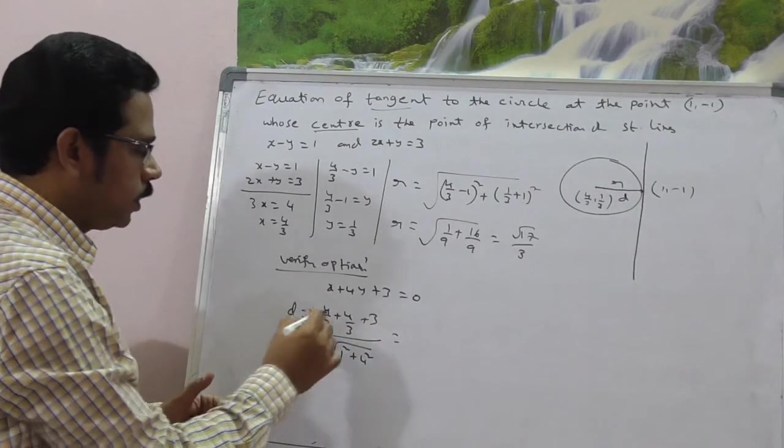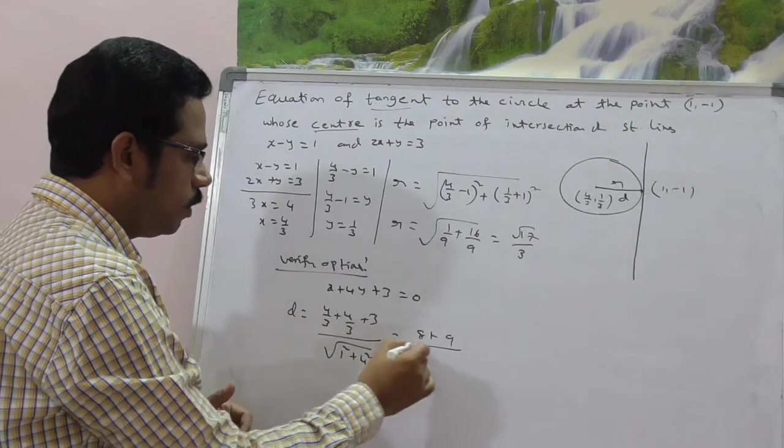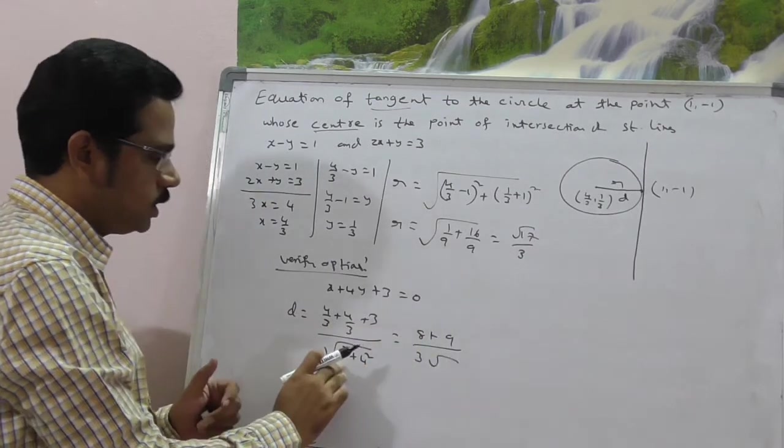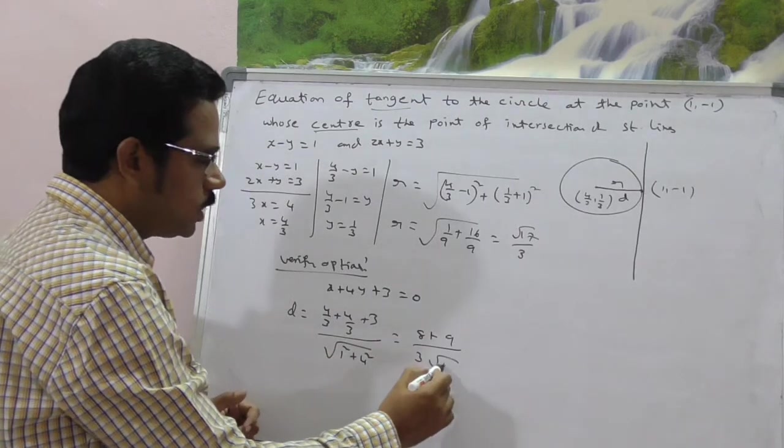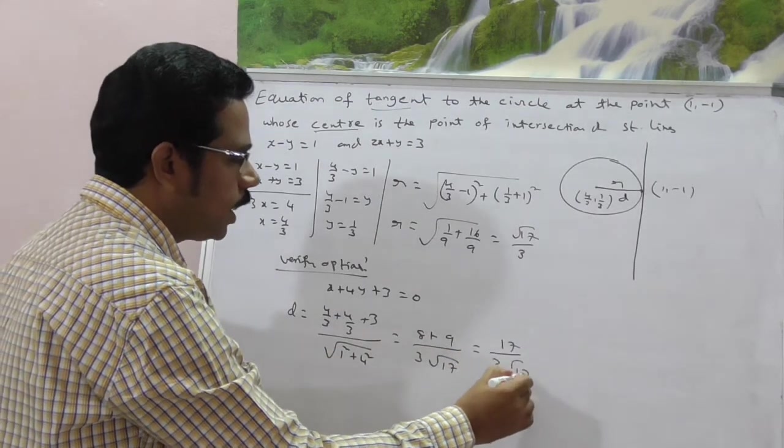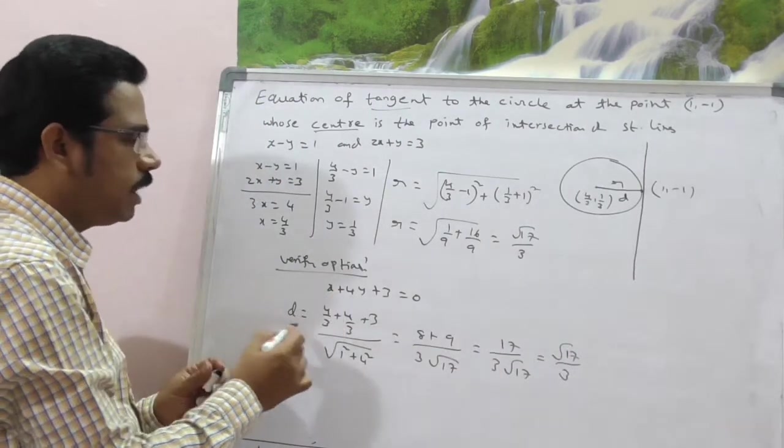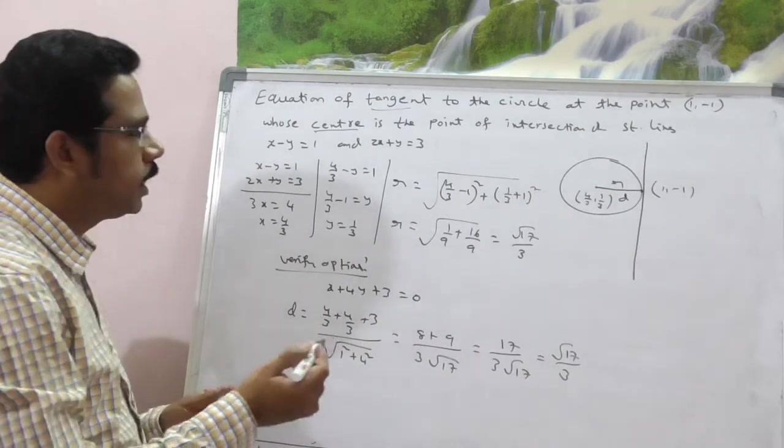Now, this is equal to 4 plus 4, 8 plus 3, LCM 3 of 3, 9 by 3 roots. What is this? 1 plus 16, that is equal to root 17. 17 by 3 root 17, that is nothing but root 17 by 3. So, for this line, d value is equal to root 17 by 3.